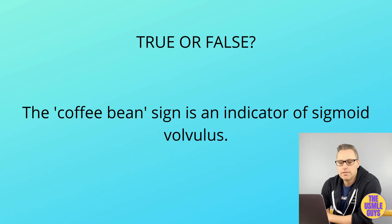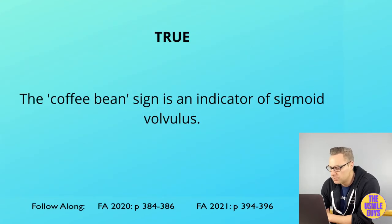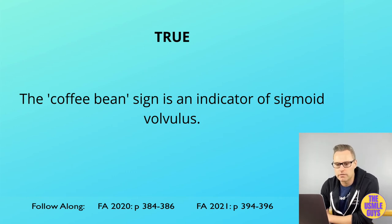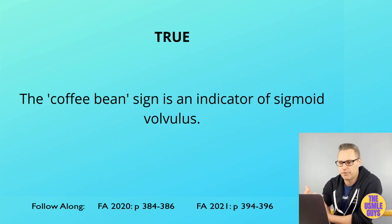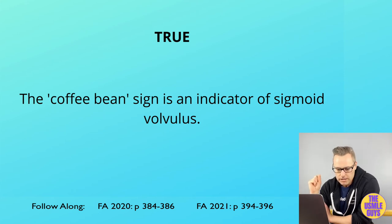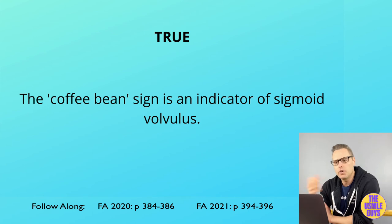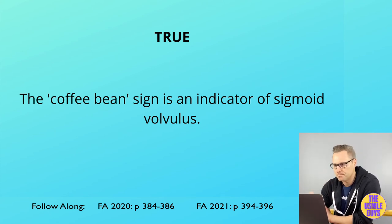Sigmoid volvulus in adults is associated with the coffee bean sign on x-ray. It's highly recommended to Google 'coffee bean sign volvulus' to see various imaging examples, as recognizing patterns across multiple images is very helpful for exam day.